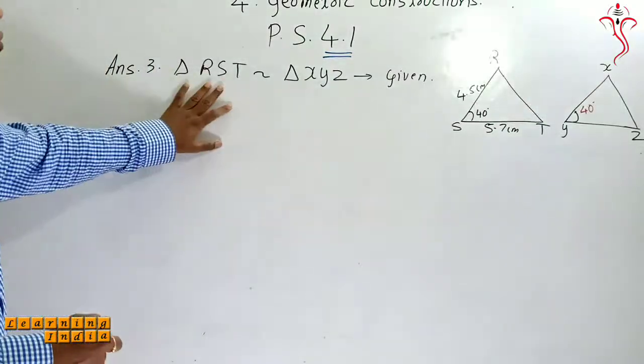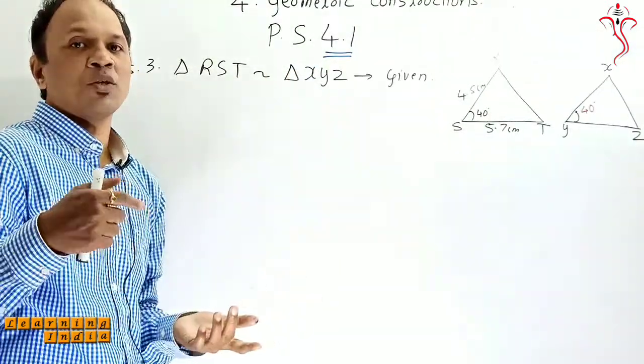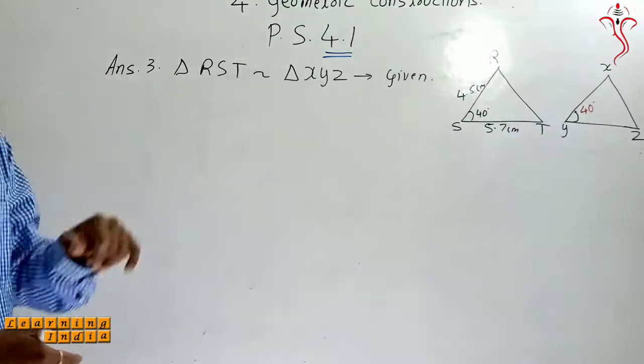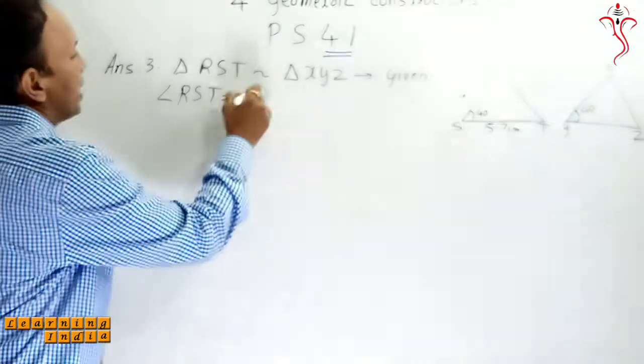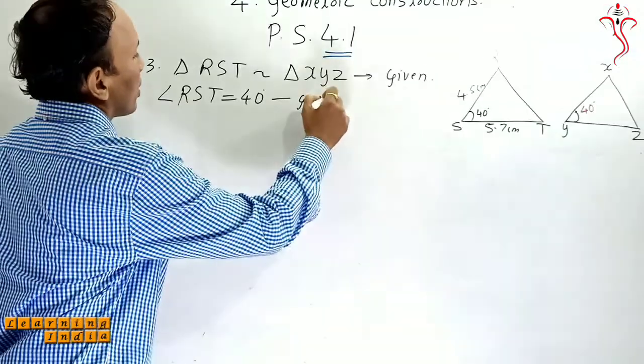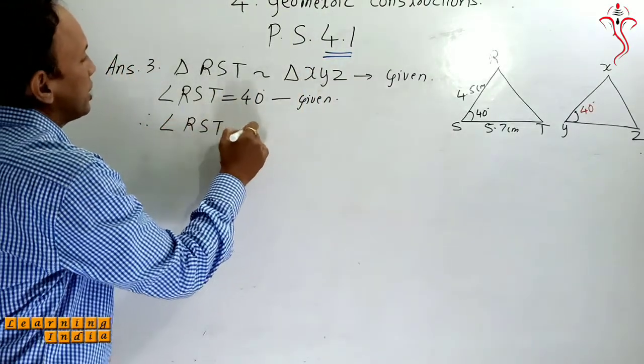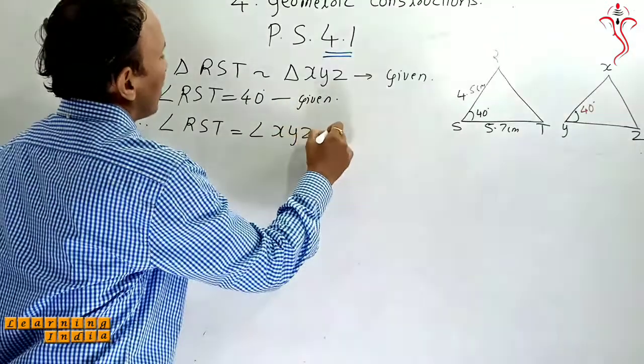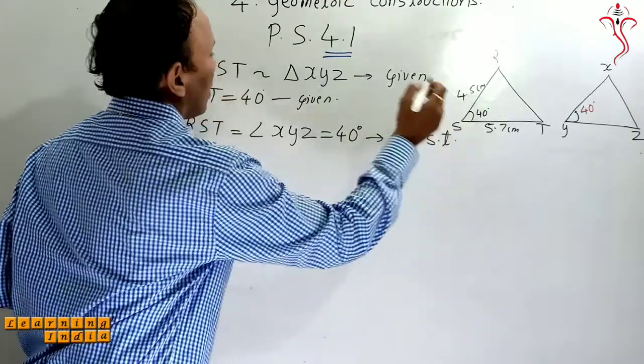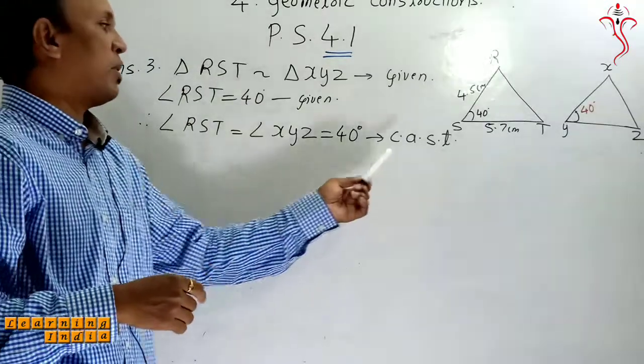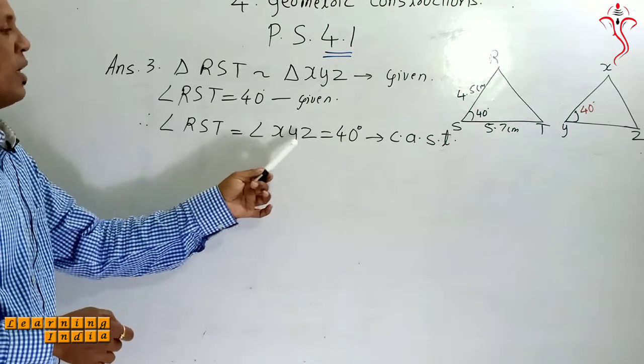So we have to look at RST similar to XYZ. We have to look at CAST: angle RST is equal to angle XYZ is equal to 40 degrees. The reason is CAST - corresponding angles of similar triangles. So Y value is 40 degrees.